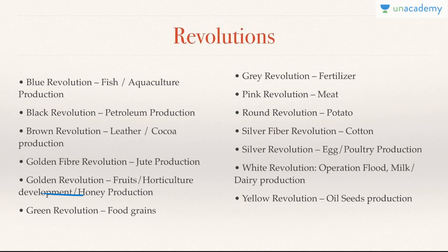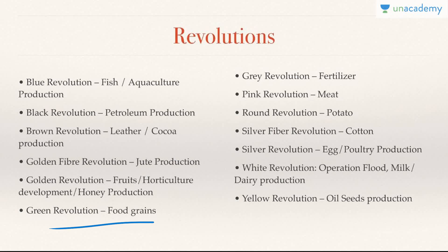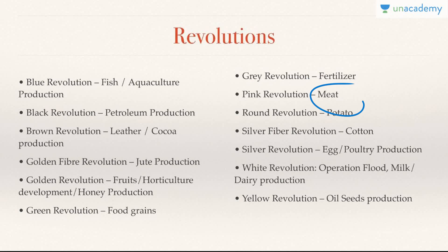Golden revolution is related to fruits and horticulture — horticulture includes flowers, fruits — and it's also related to honey production. Green revolution is the most common one, related to food grains. Gray revolution is related to fertilizers, which is trickier to remember. Pink revolution is related to meat.